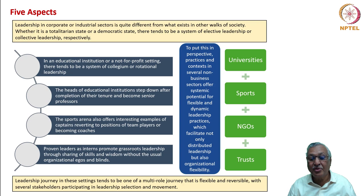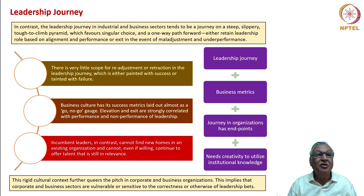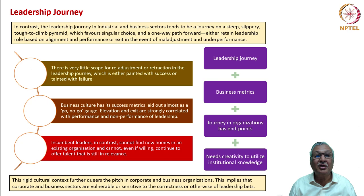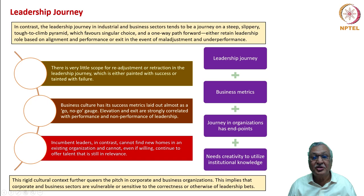Leadership in these settings tends to be a multi-role journey that is flexible and reversible, with several stakeholders participating in leadership selection and movement. In contrast, the leadership journey in industrial and business sectors tends to be a steep, slippery pyramid which favors singular choice and only a one-way path forward — either retain the leadership role as long as possible based on alignment and performance, or exit in the event of maladjustment and underperformance. There is very little scope for readjustment or retraction in the leadership journey.